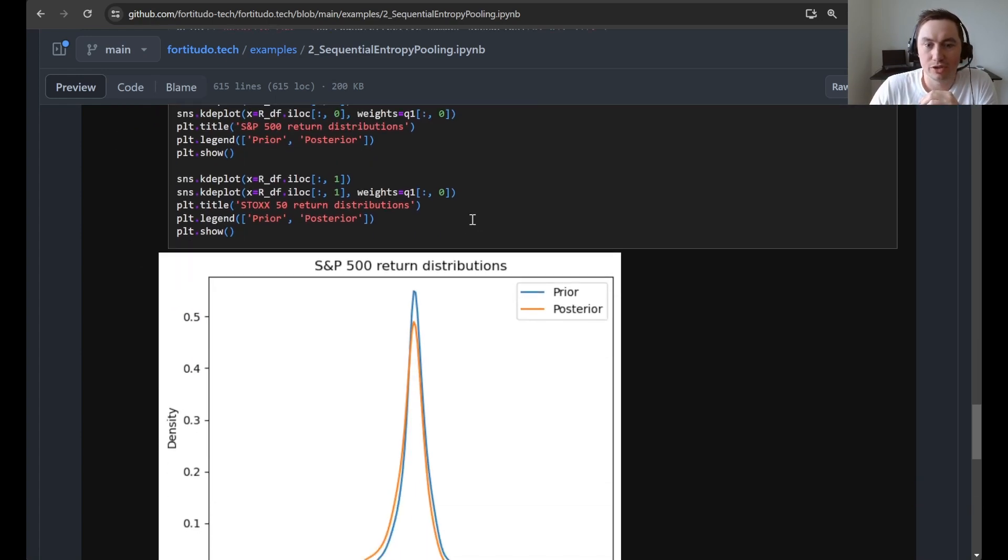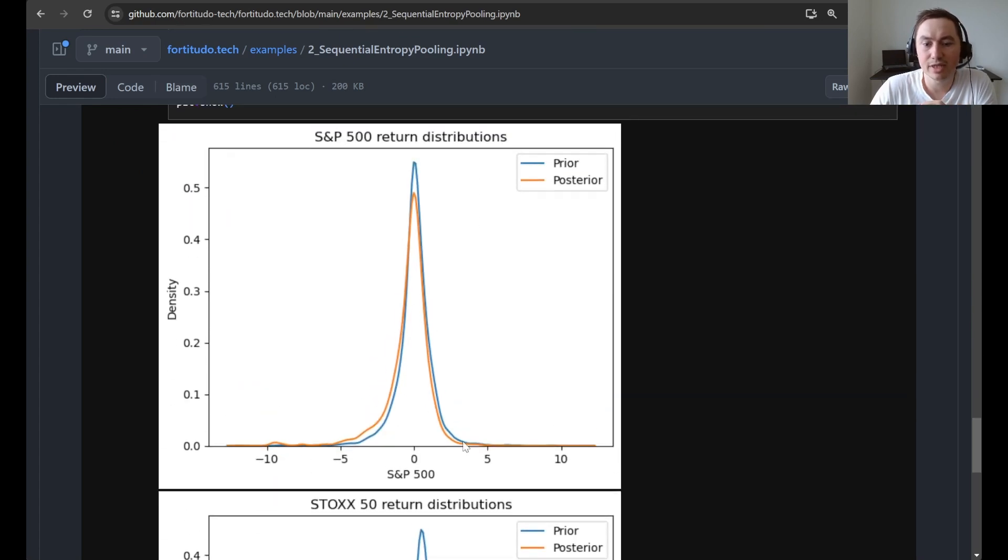Finally we just show you prior and posterior distributions again and then you can see that some of these funny looking aspects that we had before they are no longer here. So basically distributions again look like something that you would see in the real world.